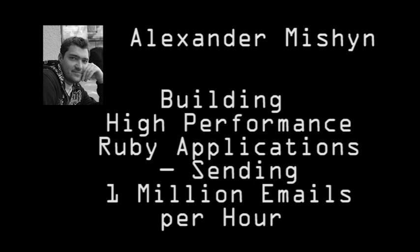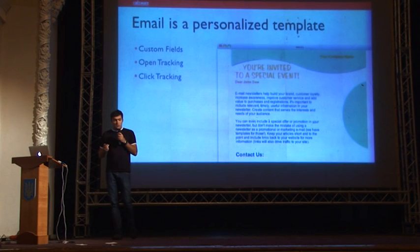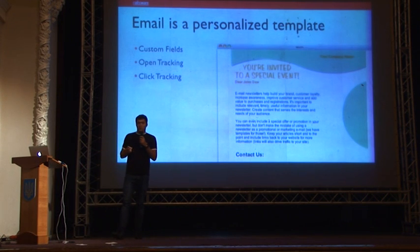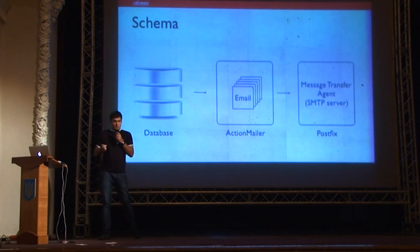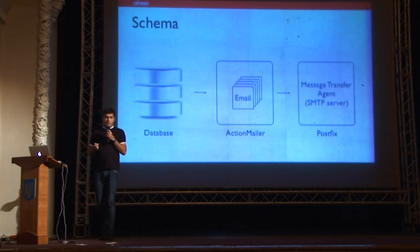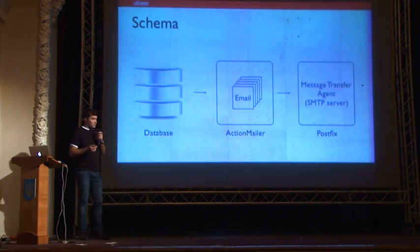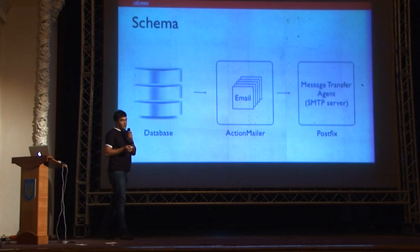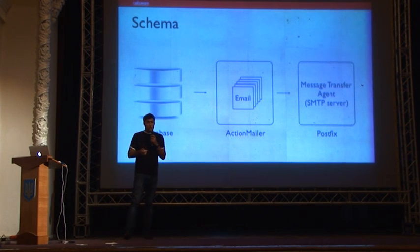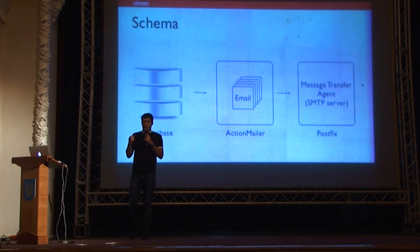Email is a personalized template. We took a template, replaced custom fields with real data, and added some unique identifiers to track opens and clicks. The schema is next. We get data from the database — email templates and recipients data — then put it together and send to the MTA.